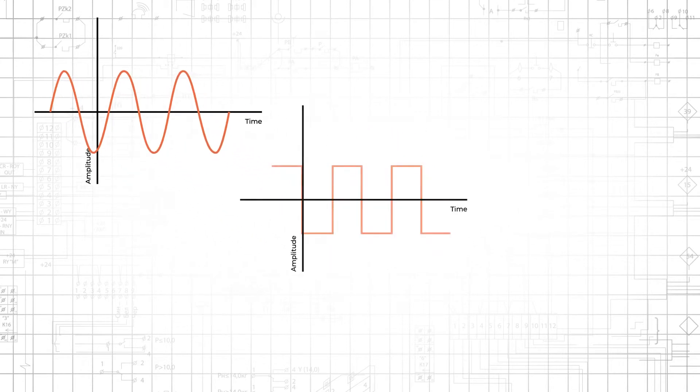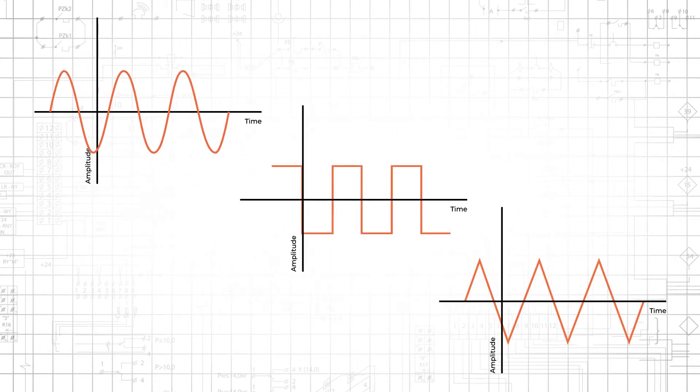This broad definition doesn't apply any restrictions related to the shape of the waveform. Square waves and triangle waves, for example, can be AC signals.